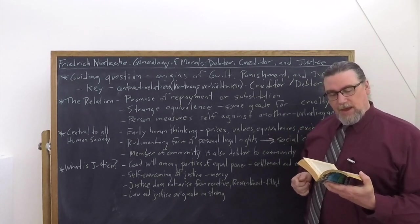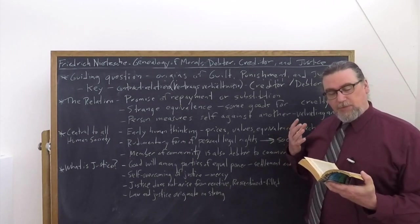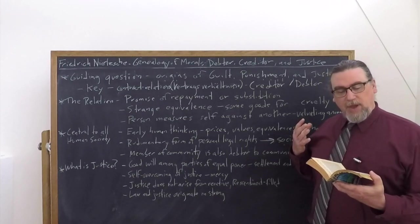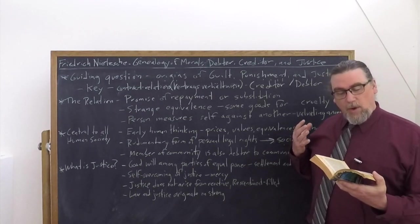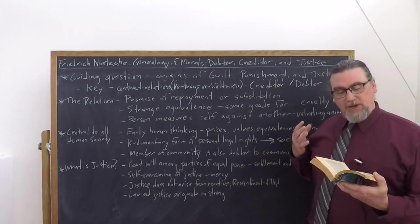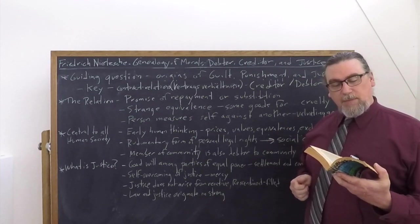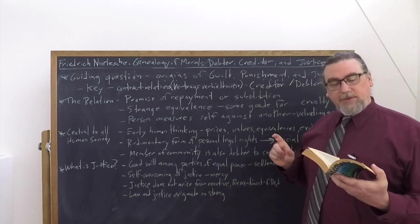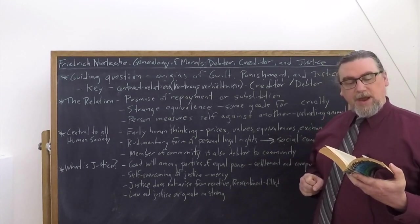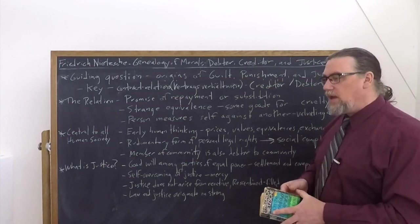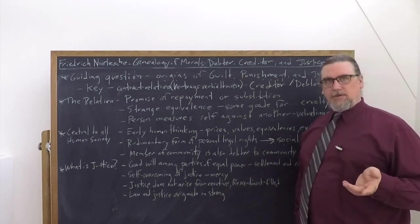And he tells us it was rather out of the most rudimentary form of personal legal rights that the budding sense of exchange, contract, guilt, obligation, settlement first transferred itself to the coarsest and most elementary social complexes in their relations with other similar complexes. So now we have not just the strong and the weak in their dynamic and the priest emerging out of it. We have this entire domain that is interpenetrating that of buying, selling, exchanging, valuing, making promises, all of those things are being combined with it. And this interpenetrates those primitive social complexes.